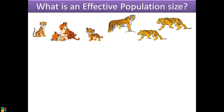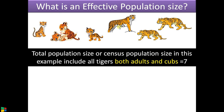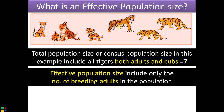Let's take an example. Suppose this is a tiger population in a region of a forest. Total population size refers to the total number of individuals in that population, including both adults and cubs — here the number is 7. Whereas effective population includes only the number of breeding adults in the population. In this figure, the adults are these three. So that's the basic difference between effective population size and total population size.